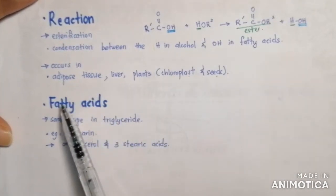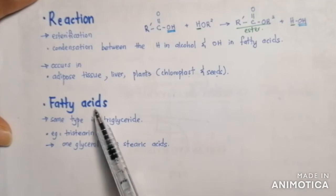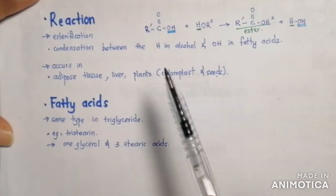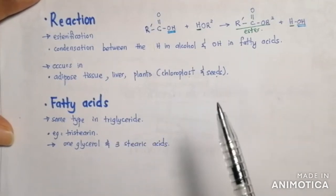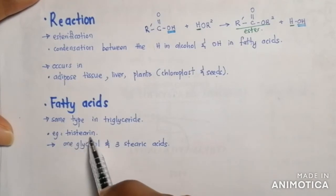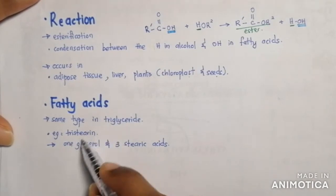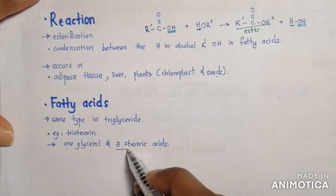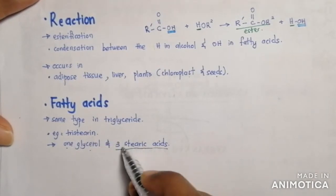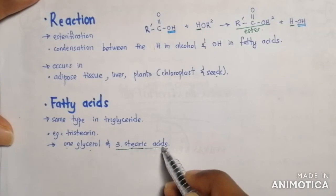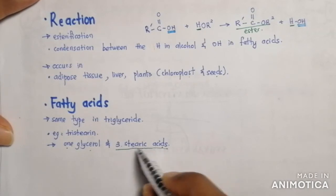Usually the fatty acids found in triglycerides are often the same type. For example, tristearin consists of one glycerol and three stearic acids — we can see that the fatty acids are all the same type.